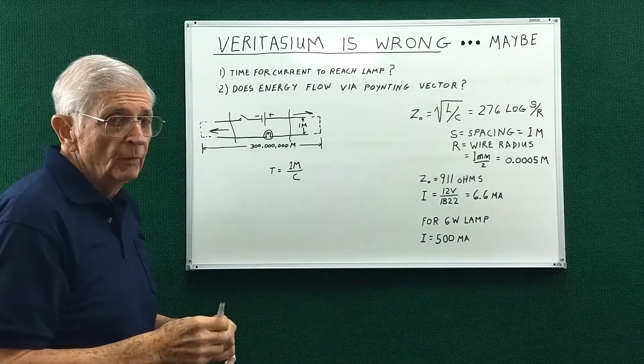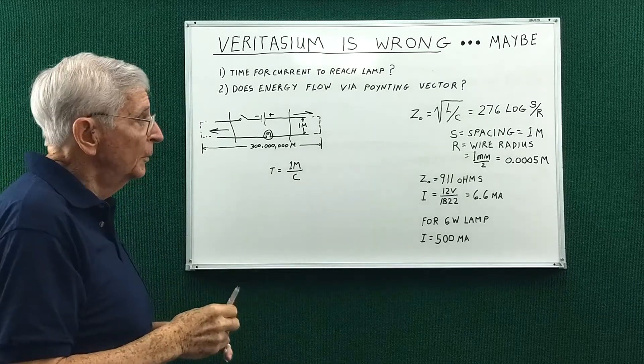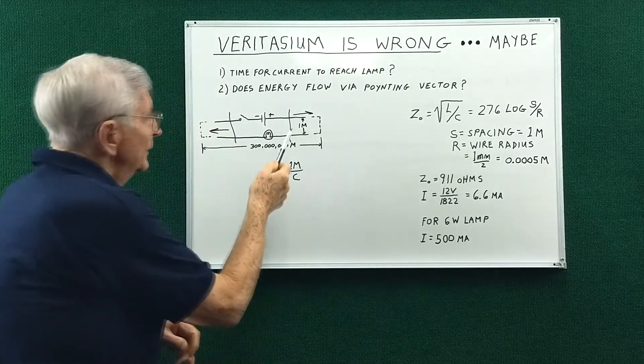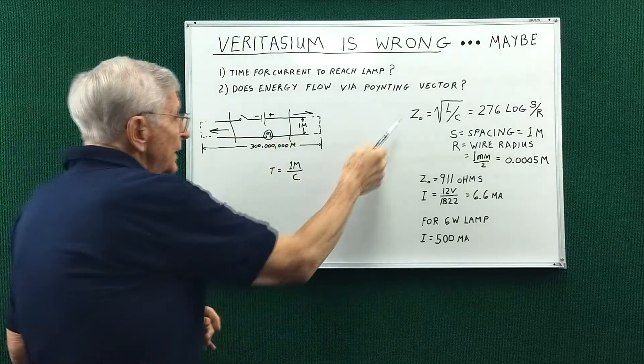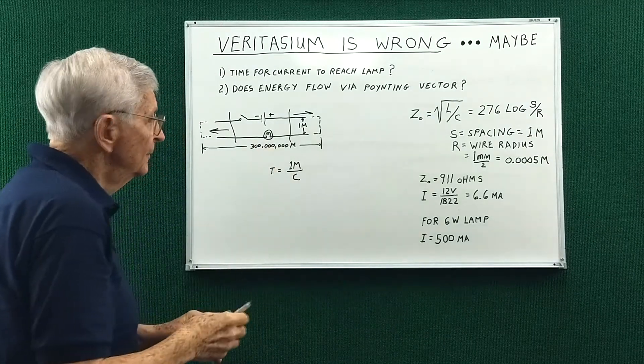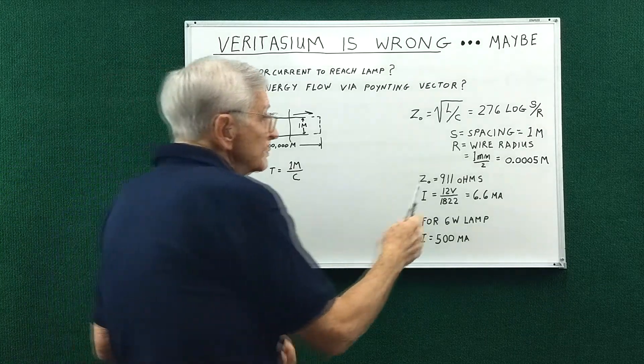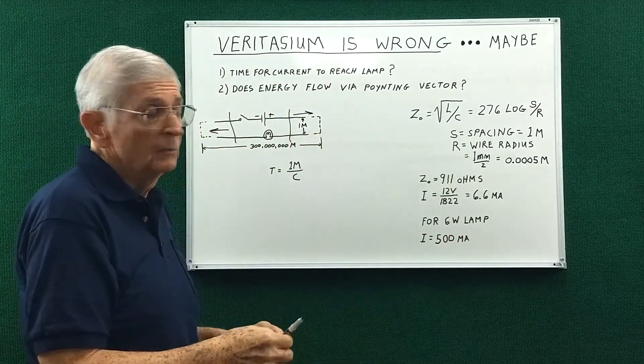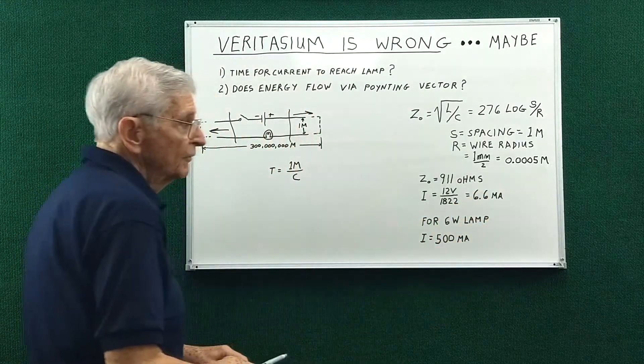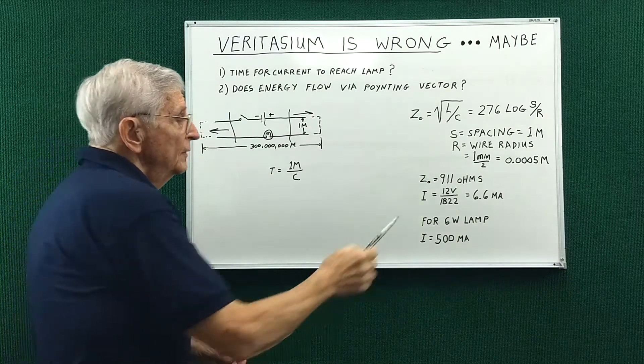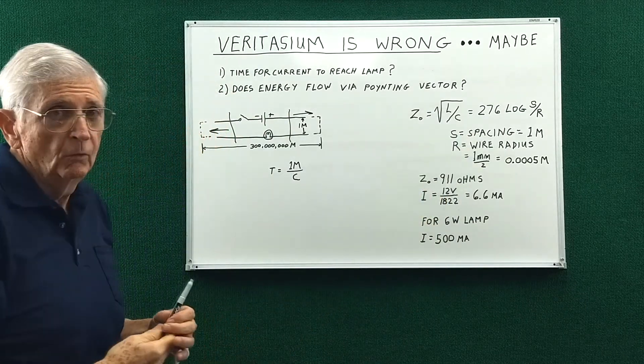Now I like to work with real numbers, it helps me conceptualize a little better. So Derek says these wires are one meter apart. To calculate this we need to know the diameter. Since they have zero resistance, I picked a very small wire of one millimeter in diameter. So that's a radius of a half a millimeter.